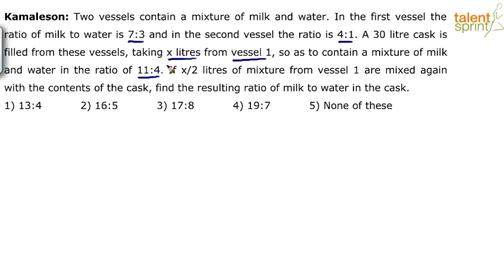Let's forget about the second part of the question for now and focus on the first part. There are two vessels containing a mixture of milk and water — the first vessel has milk and water in ratio 7:3 and the second one in ratio 4:1. A 30 liter cask is filled from these vessels, taking x liters from vessel 1 and the remaining 30 minus x liters from vessel 2, so that the mixture is 11:4.